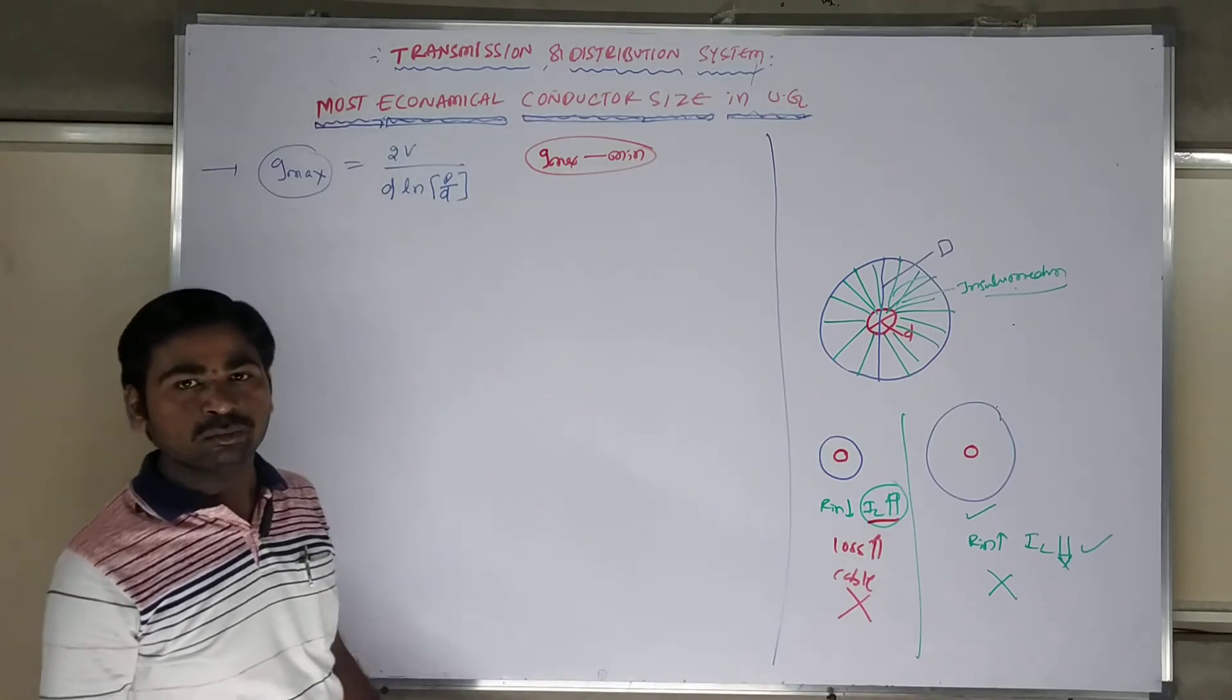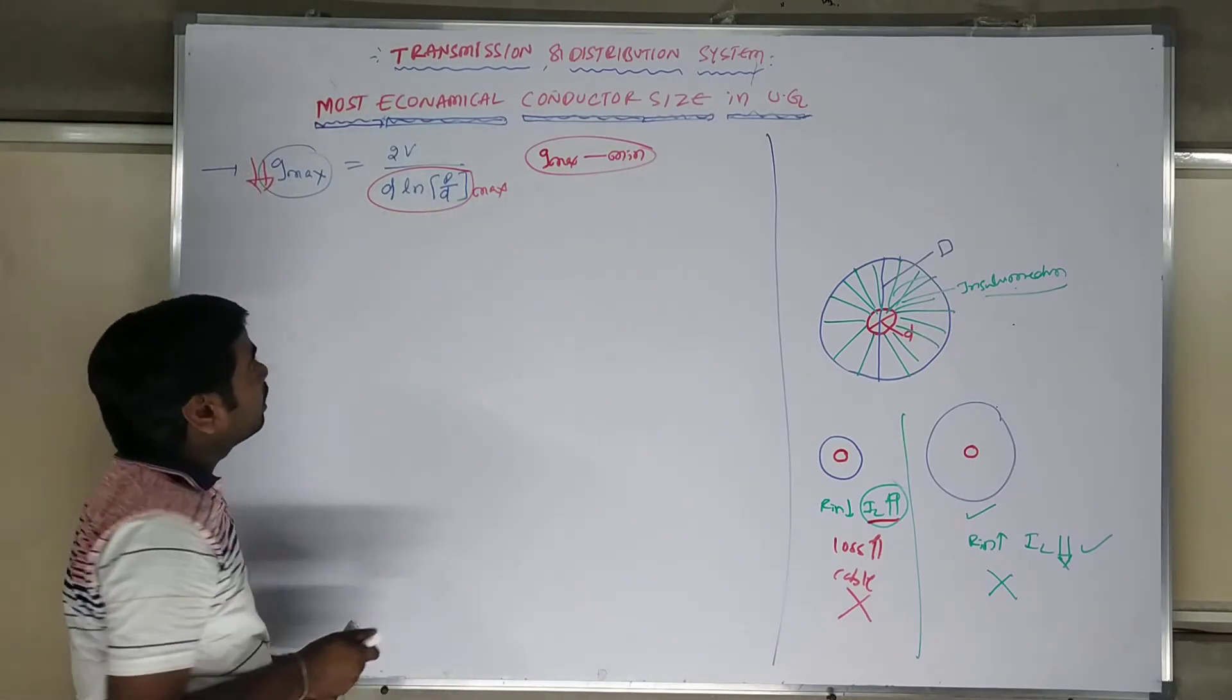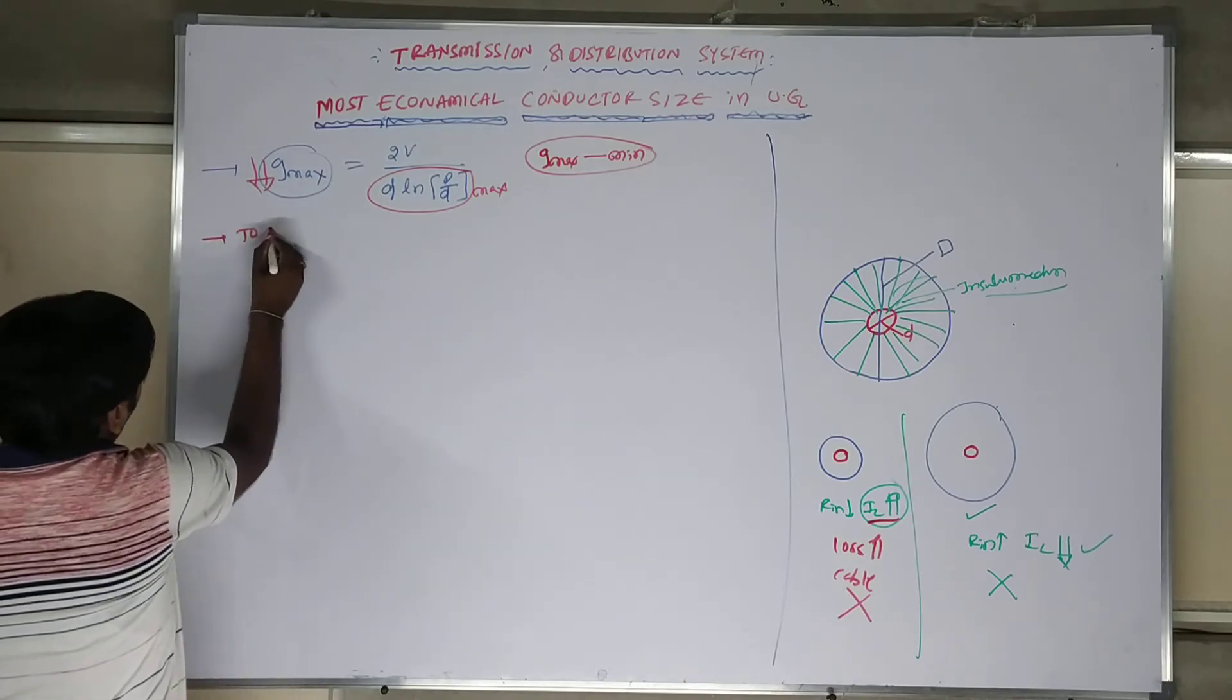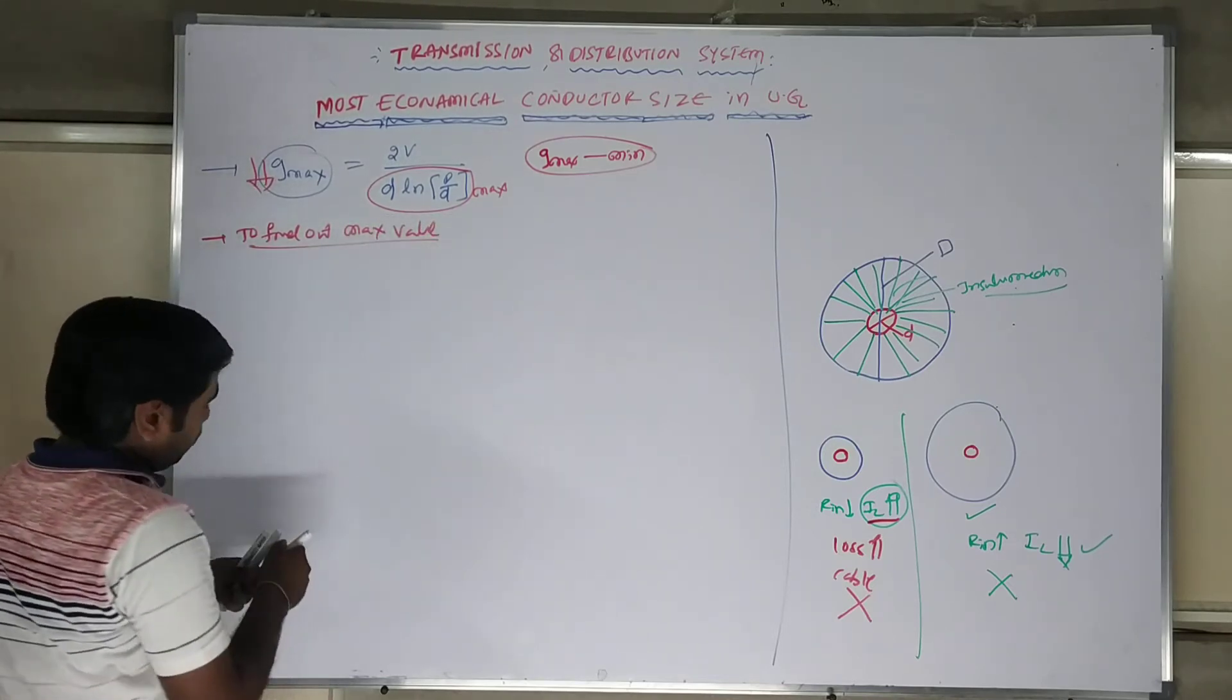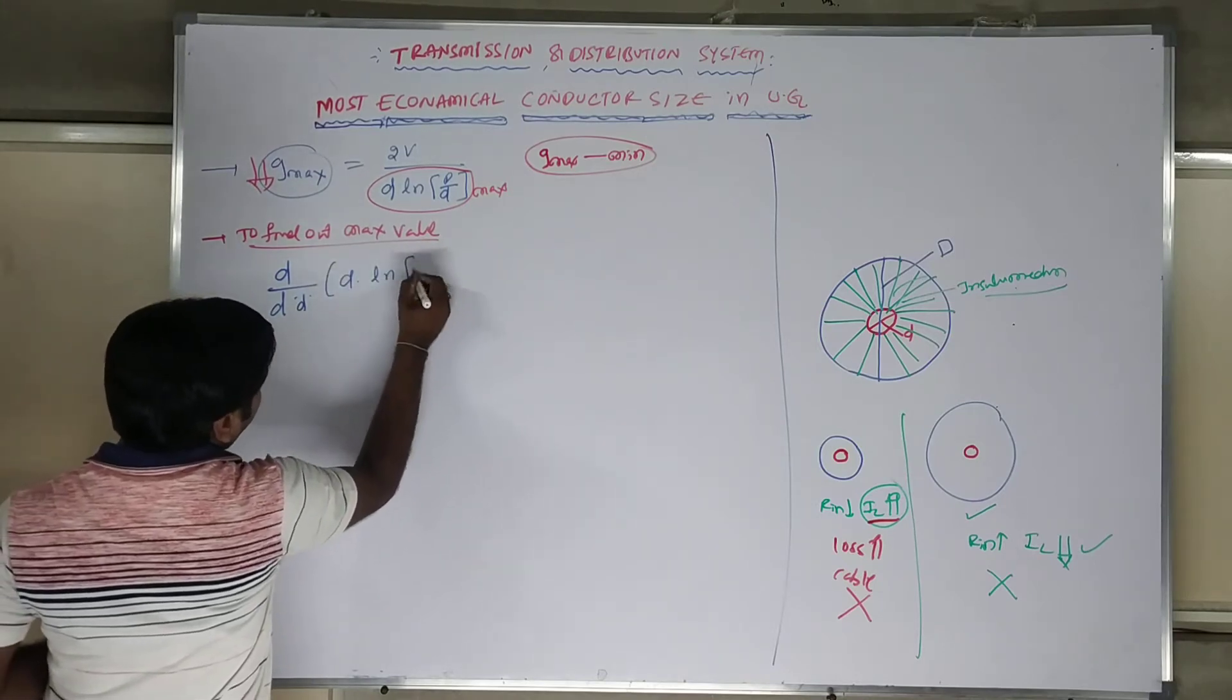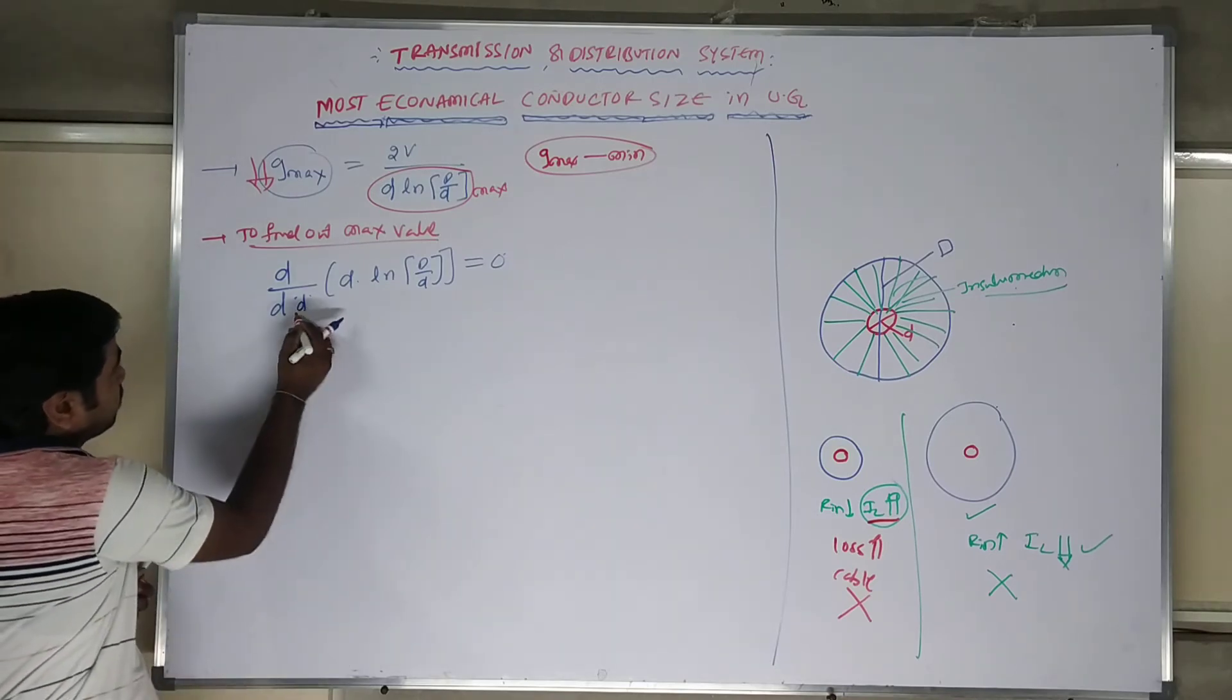To make gmax as a minimum, this denominator part should be going to maximum. This part to maximum, this value would be minimum. Therefore, d times ln D by d should be maximum. To get a maximum value, to find out the maximum value, here I can write - to find out maximum value, what do we have to do? Being a mathematics, the derivative of d with respect to d times ln D by small d should be equal to 0. This part equal to 0 by doing a derivation with respect to by changing of small value of d.